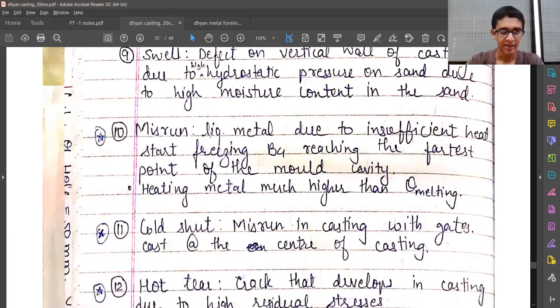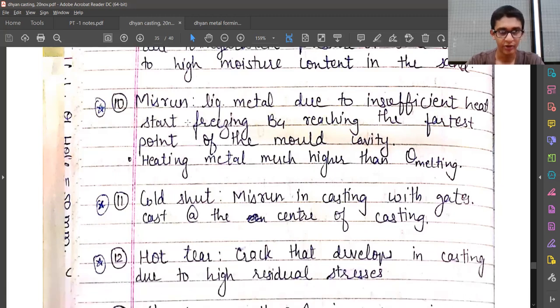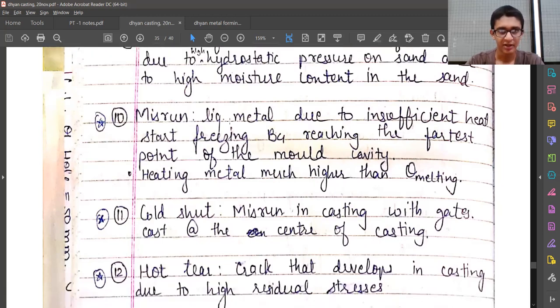Then comes an important one, which is misrun. Liquid metal due to insufficient heat starts freezing before reaching the farthest point on the mold cavity. This is a serious problem—we should do proper calculations for this to not occur.